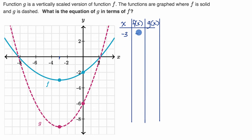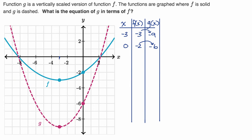When x = -3: f(-3) = -3 and g(-3) = -9. When x = 0: f(0) = -2 and g(0) = -6. We already see the pattern forming — whatever f is, g is three times that. So g(x) = 3·f(x). That is the equation of g in terms of f.